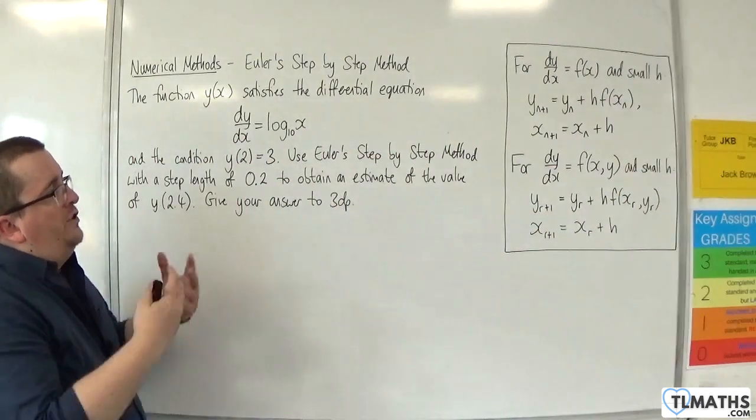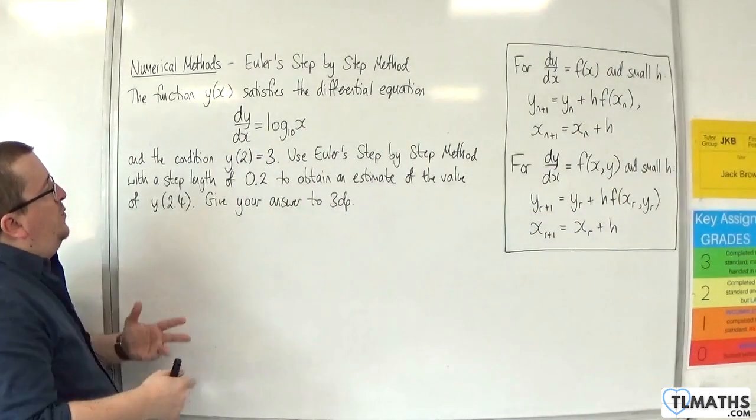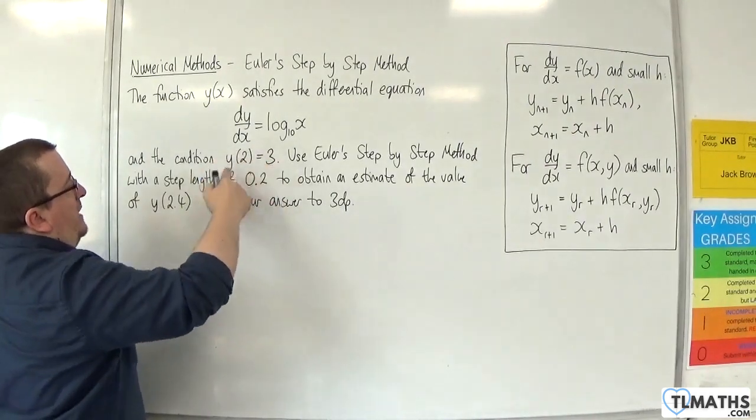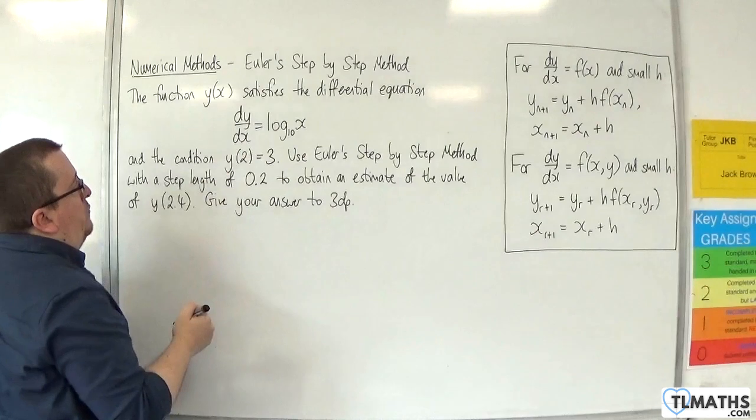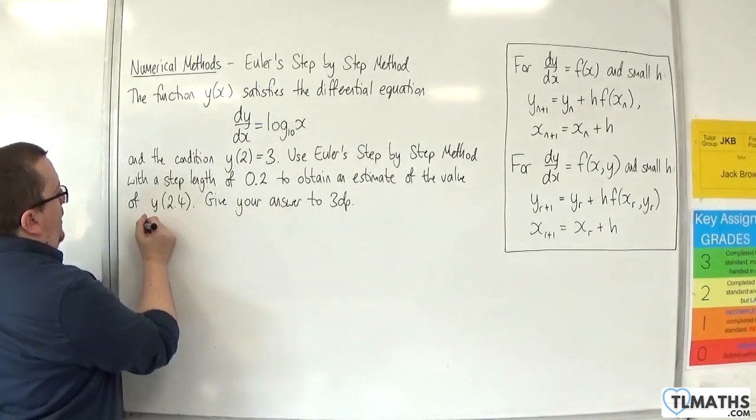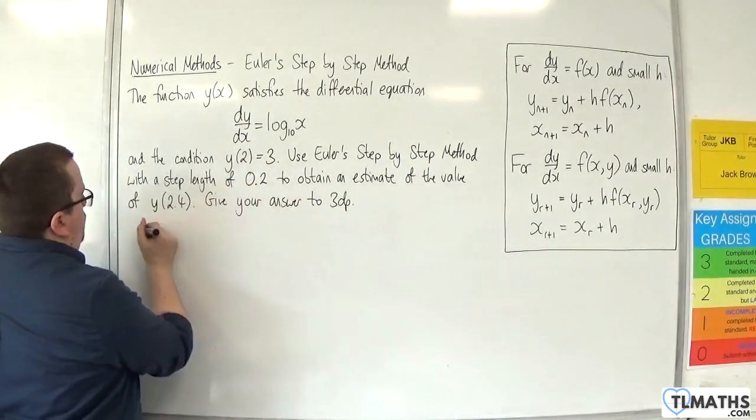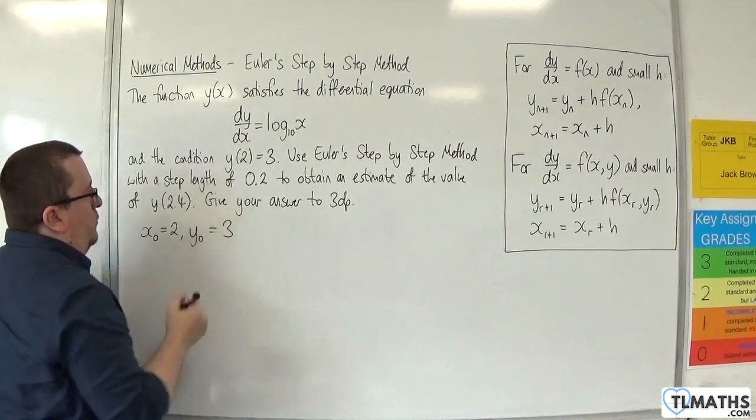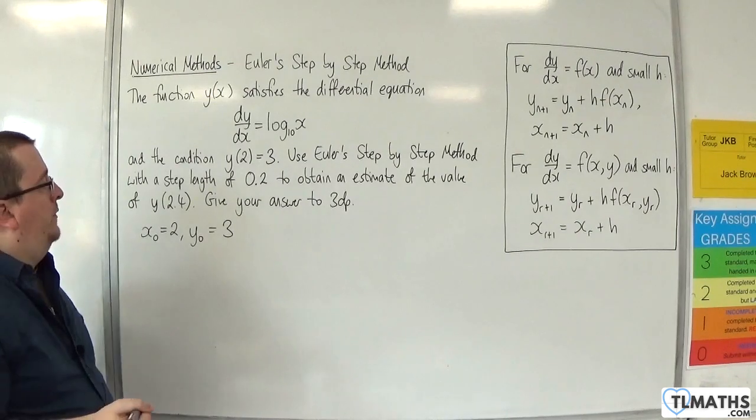Notation-wise, we need to understand that what we have here is we've been given x0 and y0. So essentially, x0 is 2 and y0 is 3. That's what that's telling us.